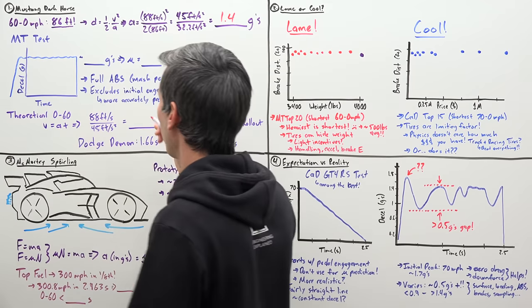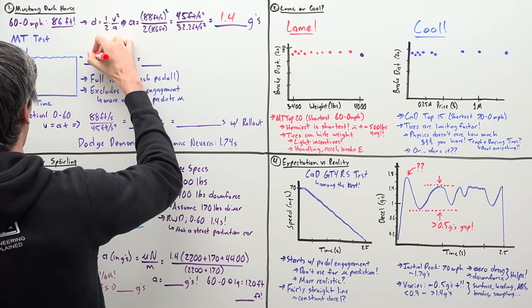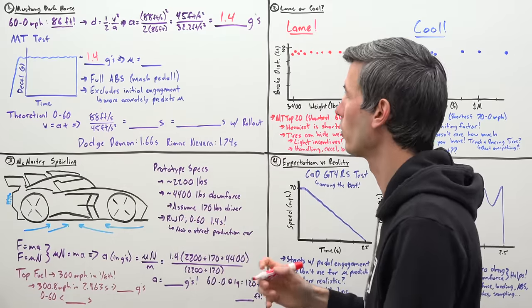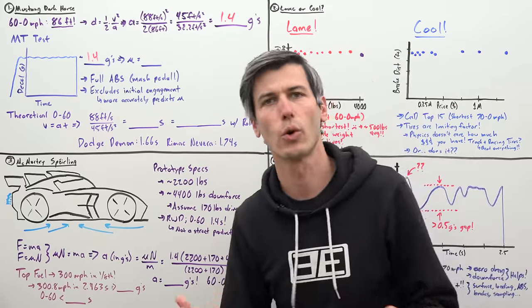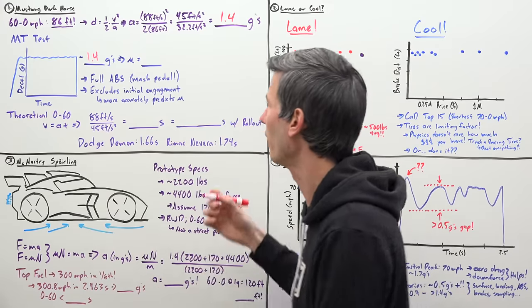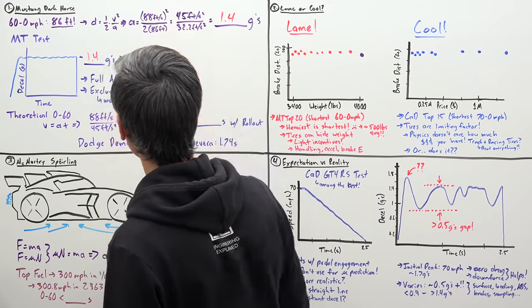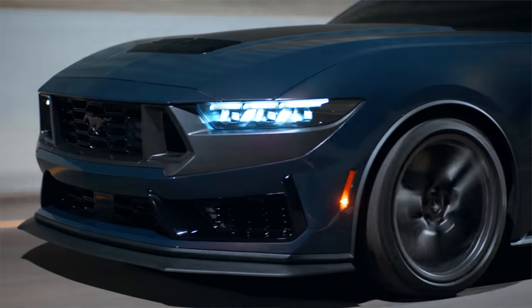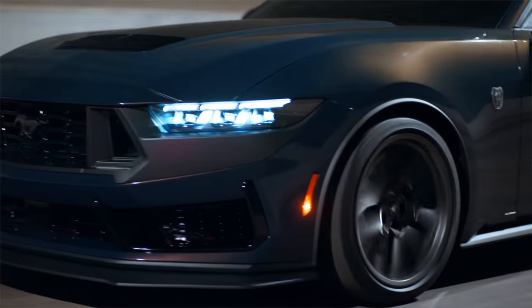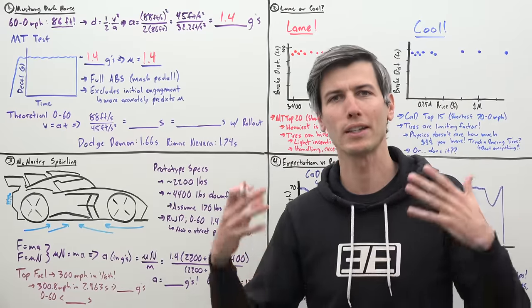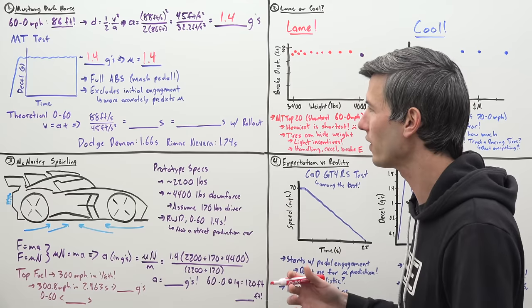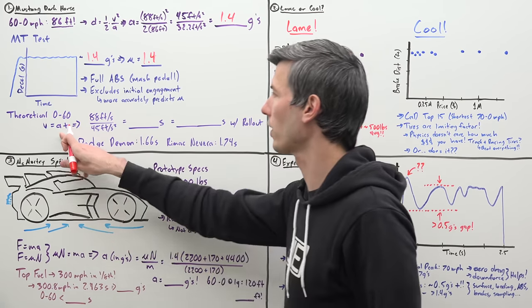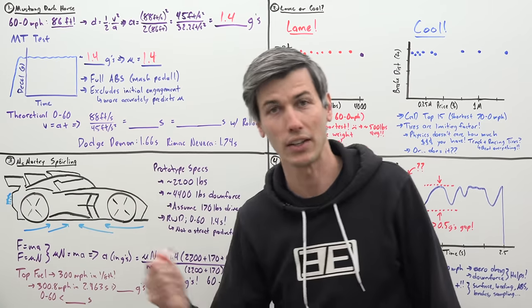So we've already reached our peak deceleration force here and then we just maintain that all the way to a stop and then of course our acceleration goes to zero. So the average for that 60 to zero is that 1.4 G's and because we know that we've already reached the peak before we stop for the entirety of that 60 to zero deceleration run, that can give us a good guesstimate of what the tire's frictional coefficient is. In other words, how much grip does that tire have? And so that frictional coefficient just correlating with the G-forces, so a mu of 1.4.